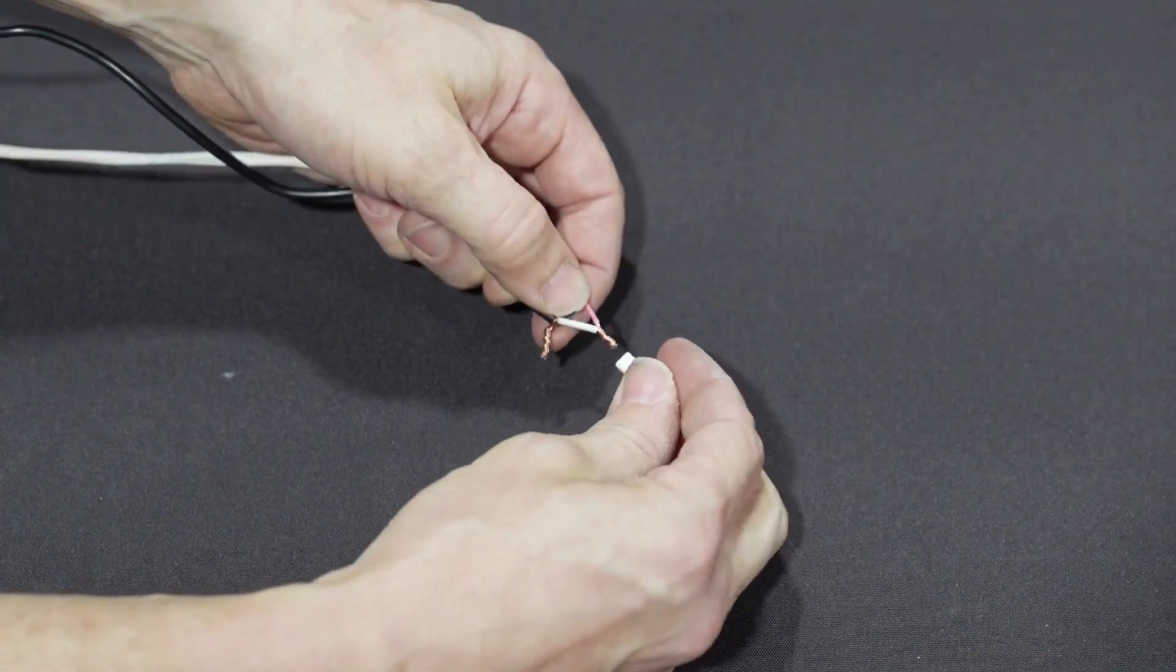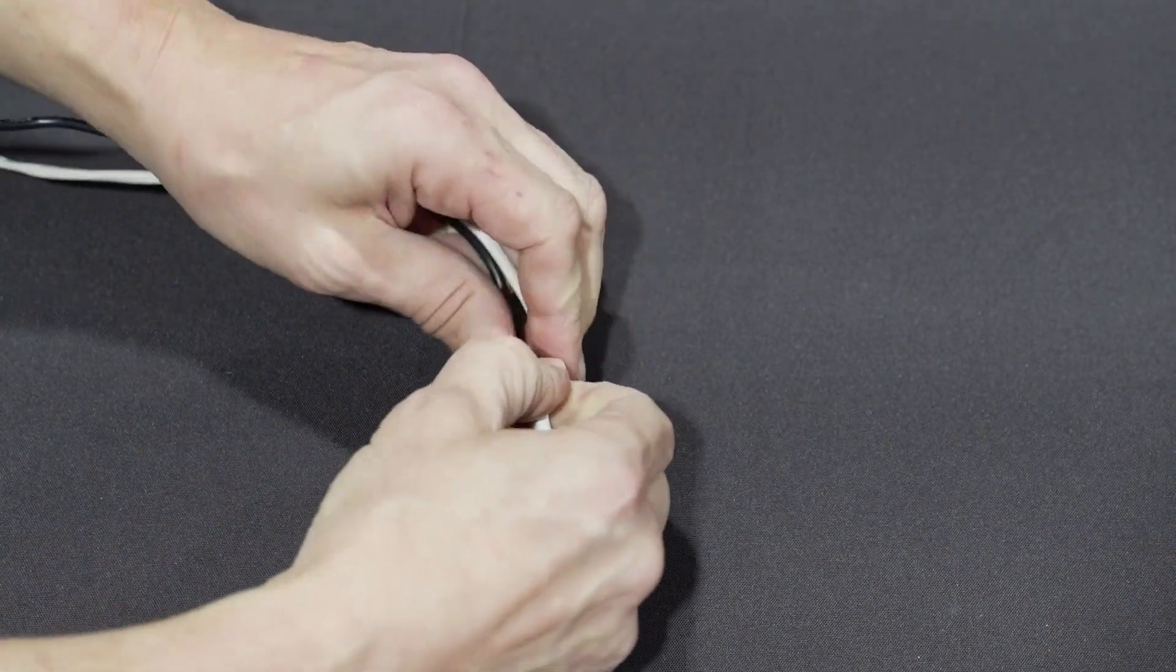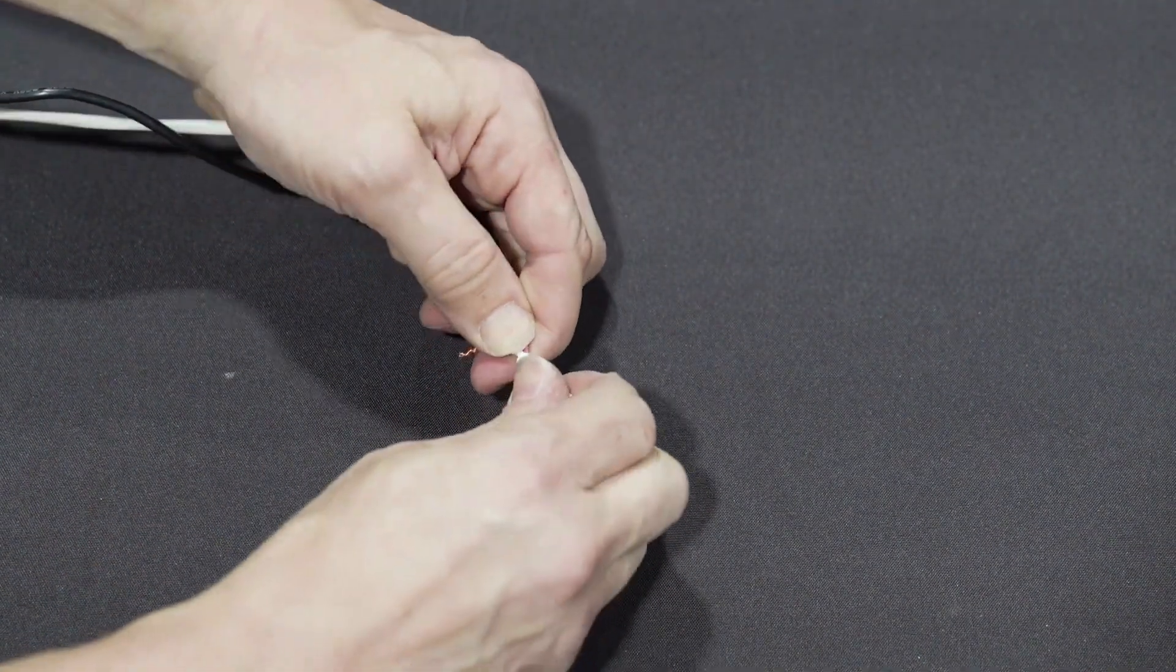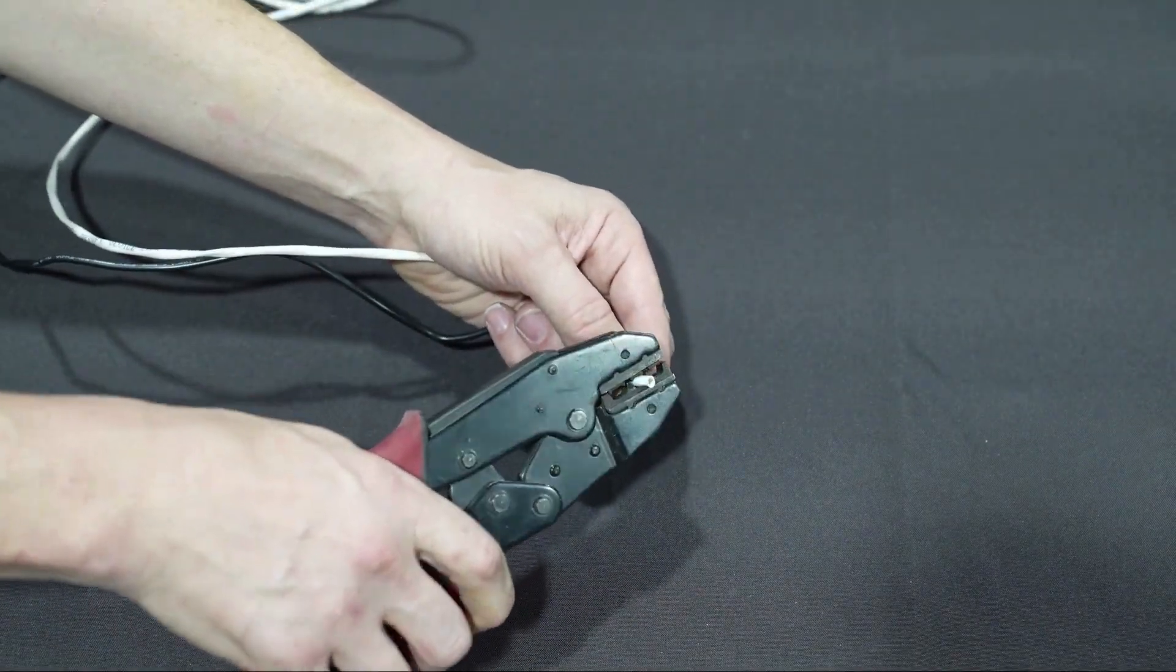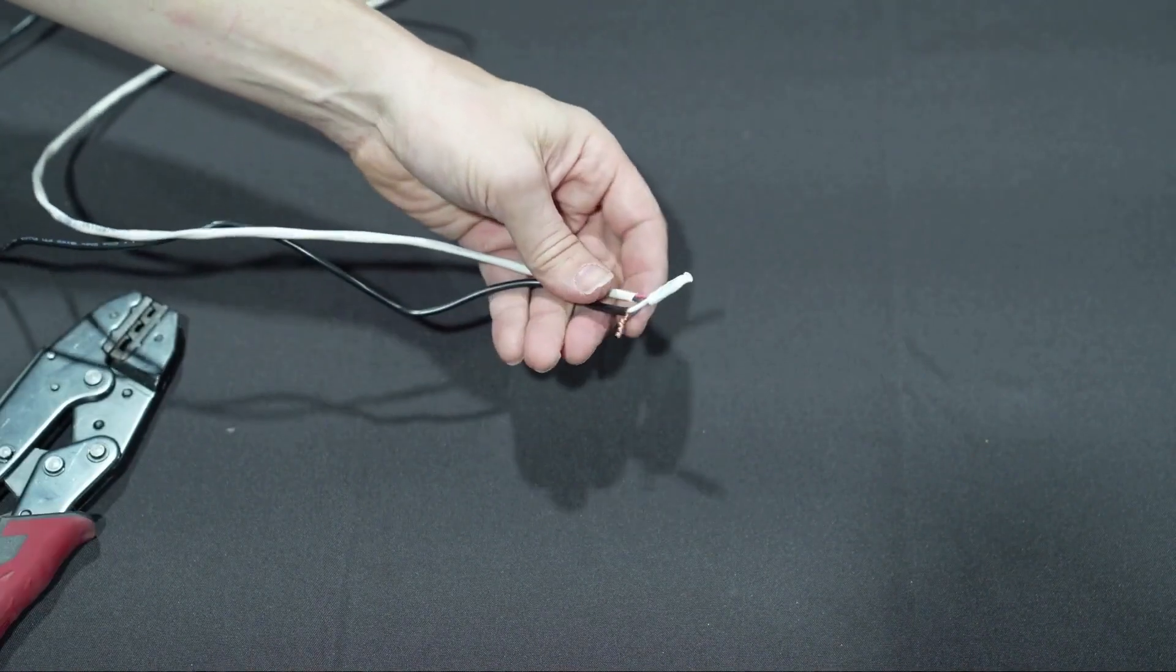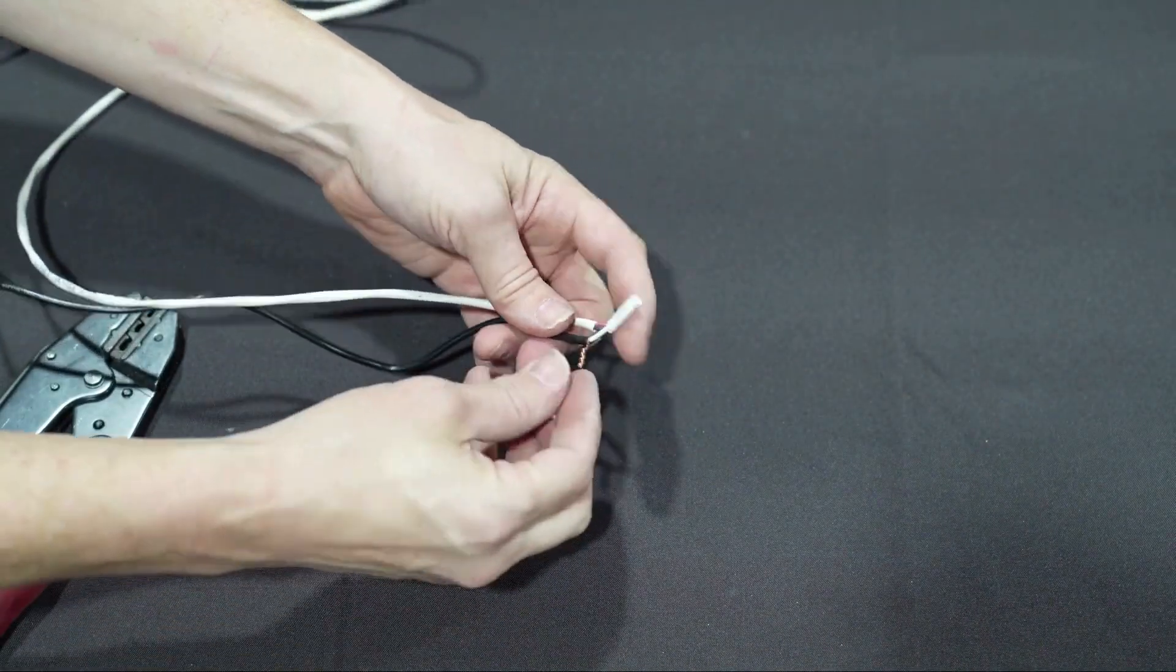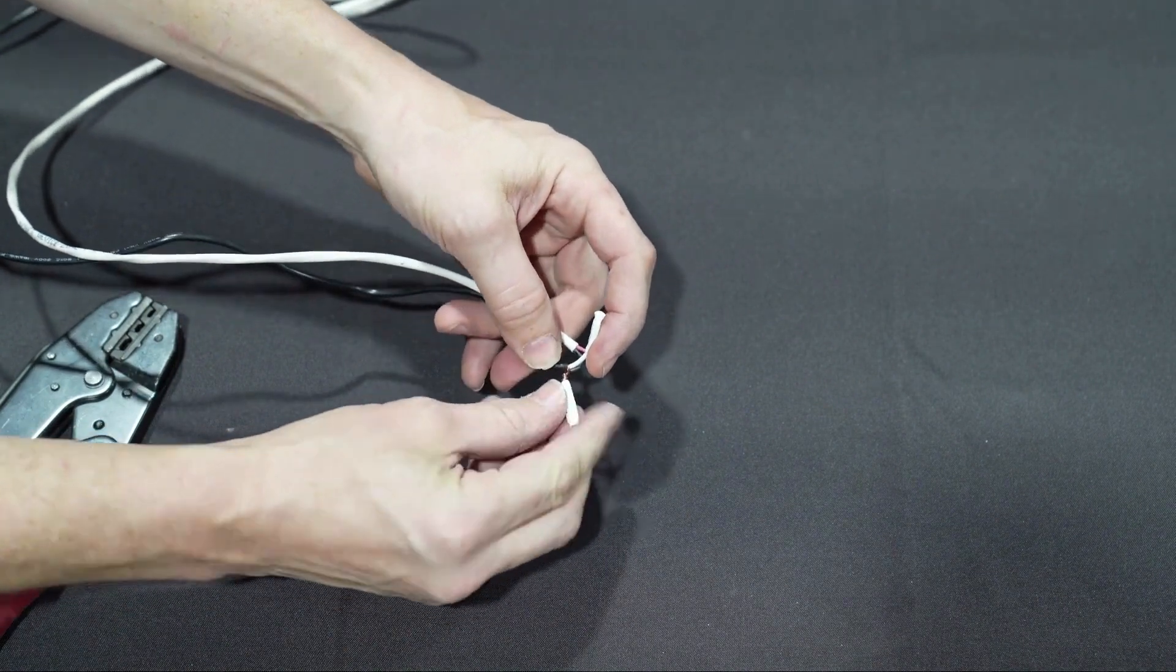Place a dolphin or cap on each splice. Use the crimpers to secure each dolphin or cap. Verify there are no loose strands that could cause a short. If necessary, redo the splice. Loose strands will cause a short that will damage the device.